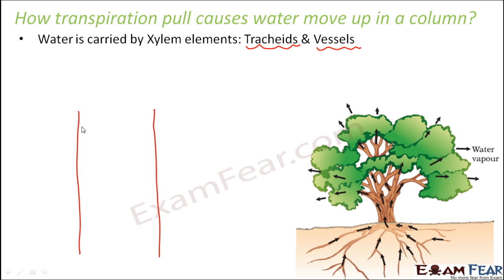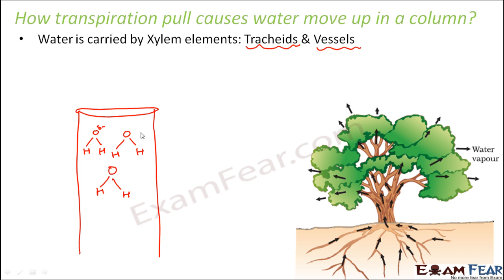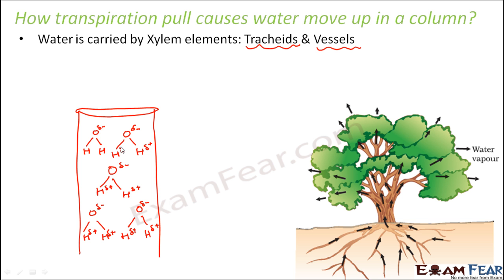A xylem tube would look somewhat like this. Inside these tube-like structures, water molecules will be moving upward. The oxygen in each water molecule has a slightly negative charge, and the hydrogens have a slightly positive charge. This is how water molecules are present and moving inside the xylem tube. One plant has thousands and thousands of xylem tubes — there is not just one.